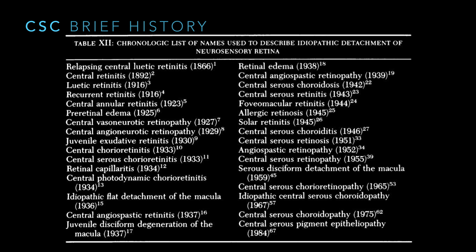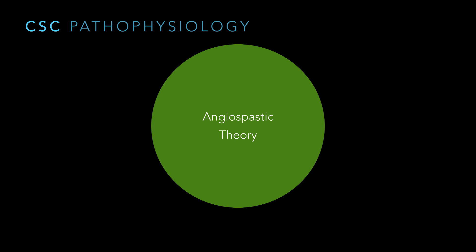Briefly, von Graefe first described central serous chorioretinopathy, or CSC, back in 1866. He called it relapsing central leuetic retinitis, which still has some relevance today with the first word because we know it recurs, but the leuetic connection is no longer true — it is not related to syphilis at all. Initially, people thought it was related to retinal vessel spasm, which led to central serous. That was debunked by Dr. Don Gass once fluorescein angiography came into its own.